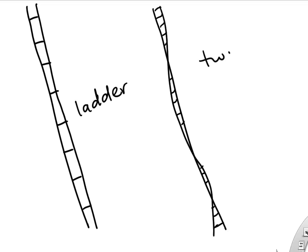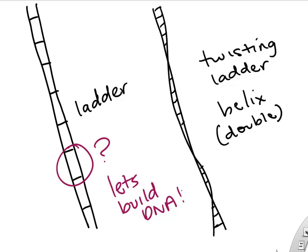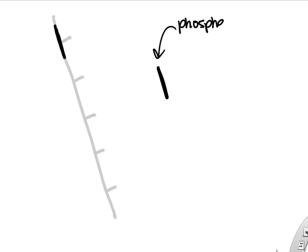If we look at the structure of DNA — what is DNA actually made of — a lot of times we'll draw DNA as a ladder or a twisting ladder. The twisting ladder is sometimes called a double helix, you've probably heard of that before. Let's build a little bit of DNA and make sense of this. We'll focus on one side of the ladder, the outer structural part, which is made of sugar and phosphate.